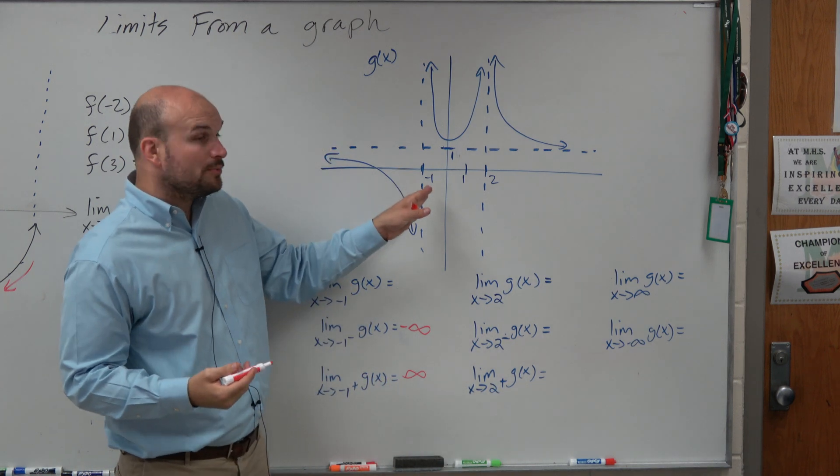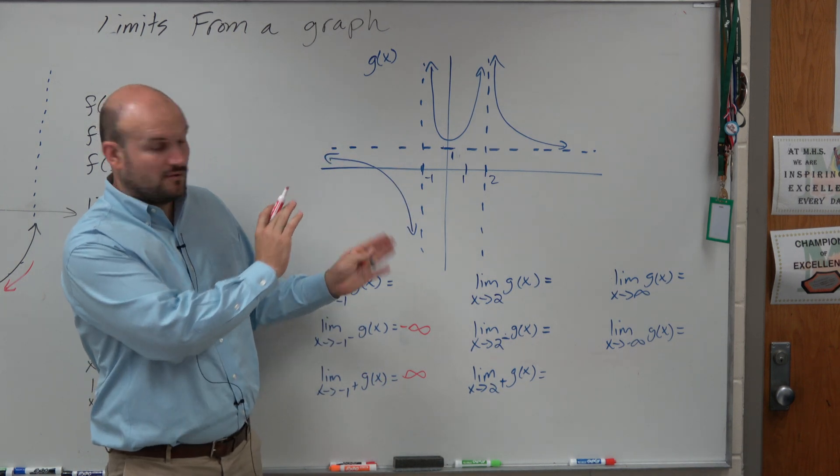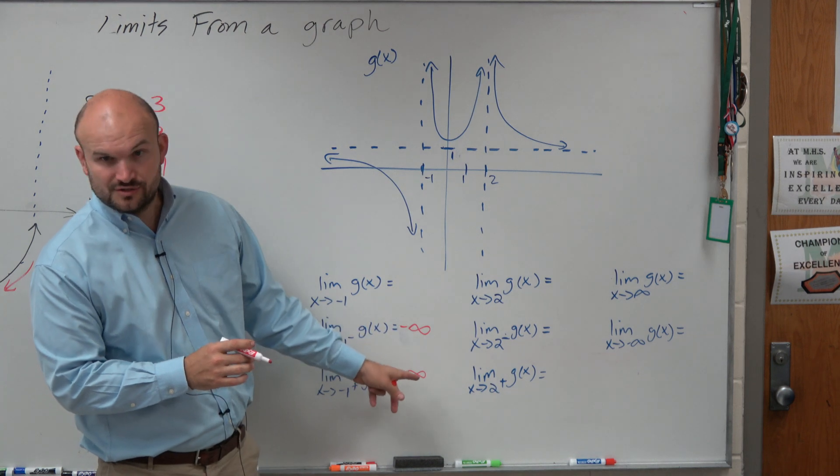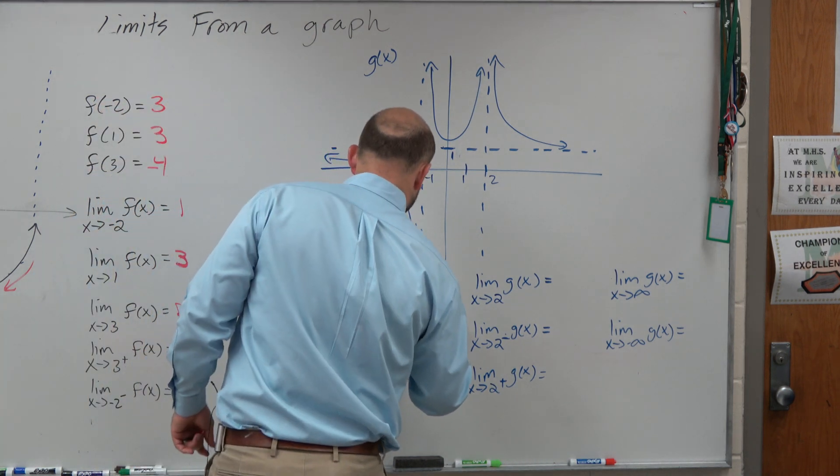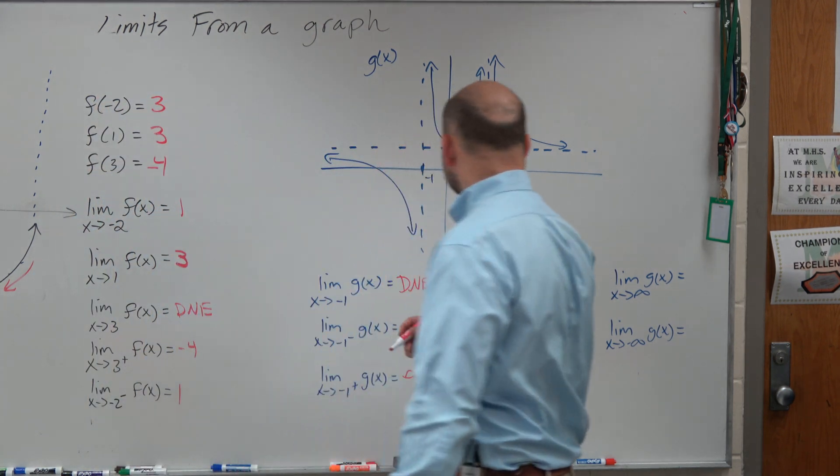The issue is we're approaching negative 1 from the left and from the right. One goes to negative infinity. One goes to infinity. So we know this limit does not exist.